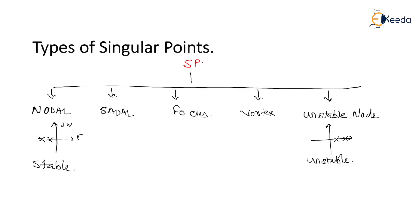Next, the 3rd point is the concept of saddle point. For saddle point, few poles are on the LHS of the s-plane and few poles are on the RHS of the s-plane. As we know, out of 100 poles, if even one pole is on the RHS of the s-plane the system by default is said to be unstable. So this saddle point is also an unstable point.